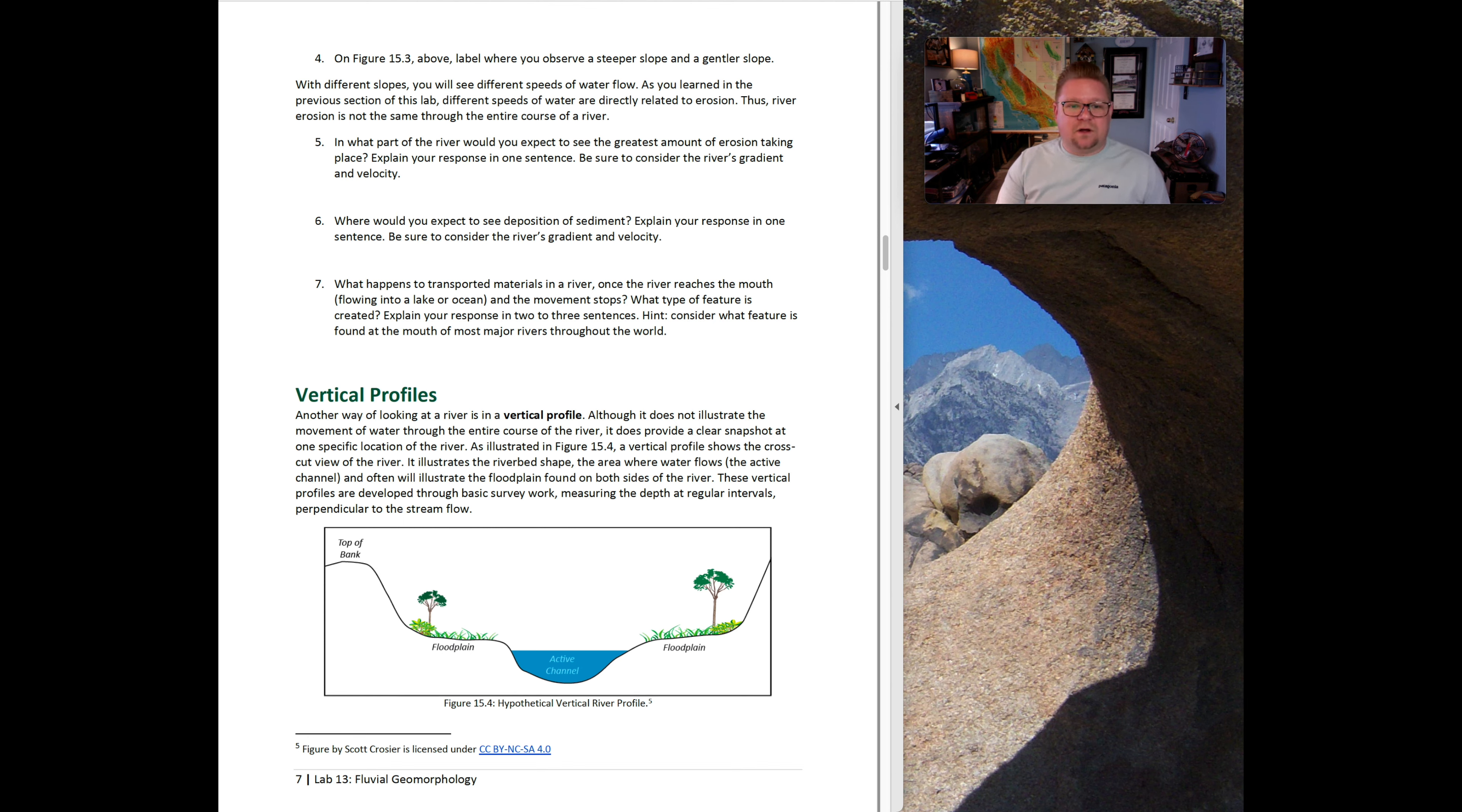Vertical profiles are another way of looking at it. Although it does not illustrate the movement of water through the entire course of the river, it does provide a clear snapshot at one specific location. What a vertical profile means is that if we were standing in the river and we wanted to look at everything, just like when we looked at topographic maps and we drew a cross-sectional profile, we do the exact same thing but in the river so we can observe it. We can see the active channel area itself, its floodplain, which is if it were to overflow where it would flow within, and then we can see the tops of the bank throughout the left and right bank. This is a very easy way for us to observe. What's great is we can actually see the shape of the river, that it's deeper on one side with less slope and much steeper on the other side.